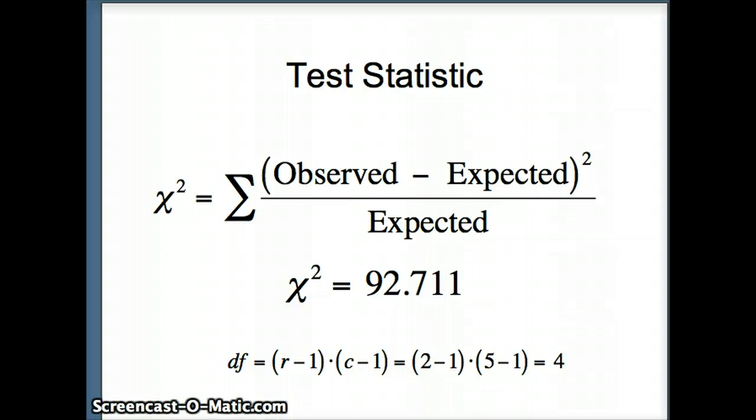Before we can continue, we also need to know what our degrees of freedom are. Degrees of freedom equals number of rows minus one. We have two rows, orange and others. Times columns minus one. We had five columns. School one, two, three, four, and five. Two minus one is one. Five minus one is four. So we have four degrees of freedom with our chi-square test statistic of 92.711.